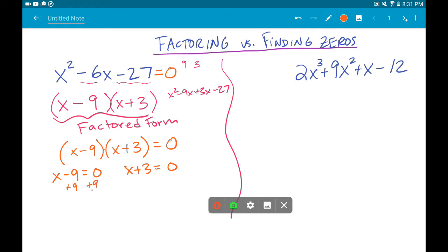And so that last step here is to set each factor equal to zero and solve for x. Isolate your variable. We get x equals nine. And if we subtract three over here, we get x equals negative three.